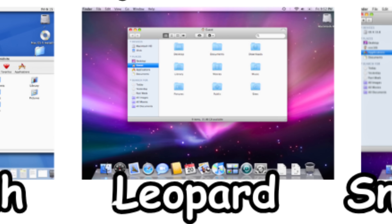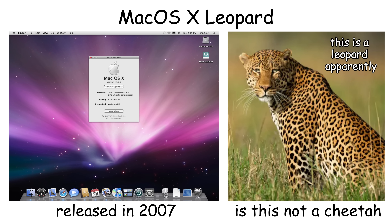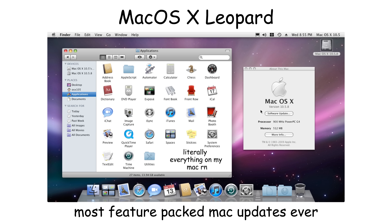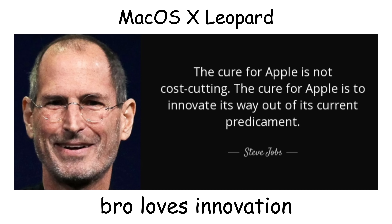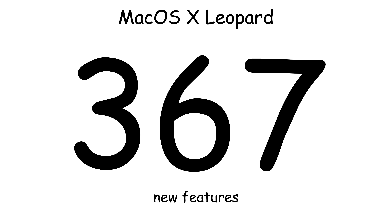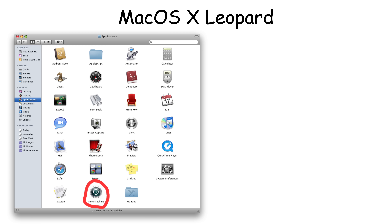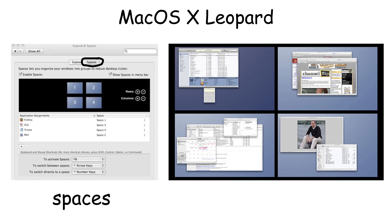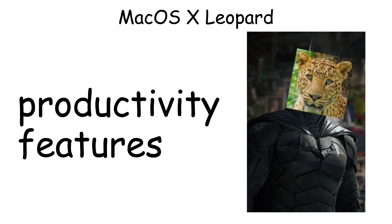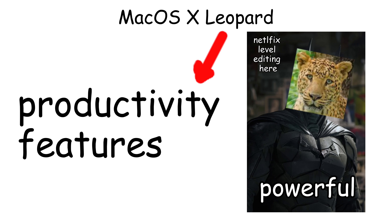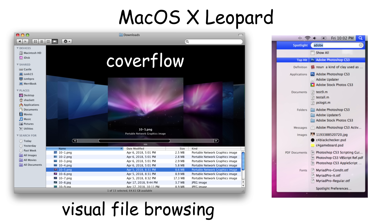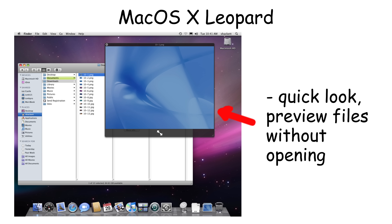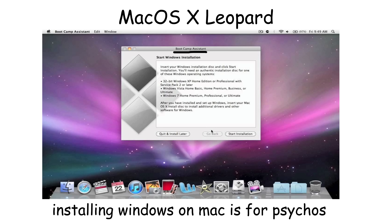Mac OS X Leopard was released in 2007, and it's considered to be one of the most feature-packed Mac updates ever. It was developed to showcase Apple's innovation with over 300 new features. Leopard introduced Time Machine, a revolutionary backup system that automatically saved file versions. It also added Spaces, which allowed multiple virtual desktops for better task organization. The redesigned Finder included Cover Flow for visual file browsing, and Spotlight search became faster. Leopard also introduced QuickLook for previewing files without opening them, and Boot Camp for installing Windows on Macs.